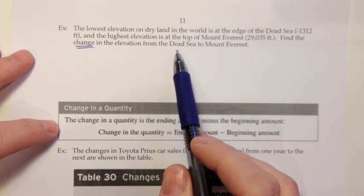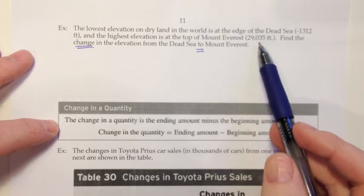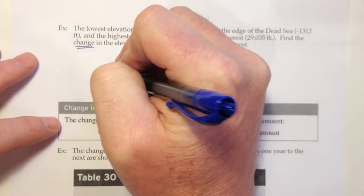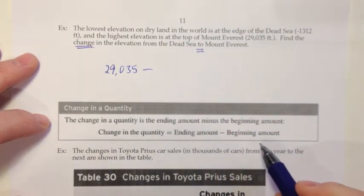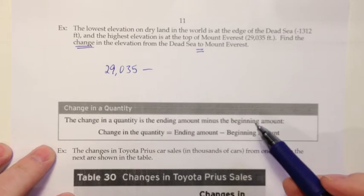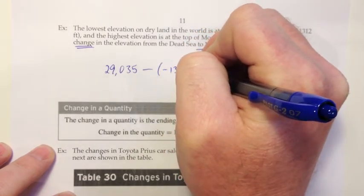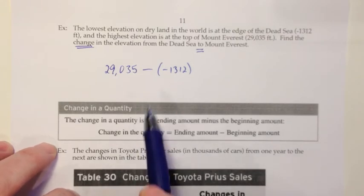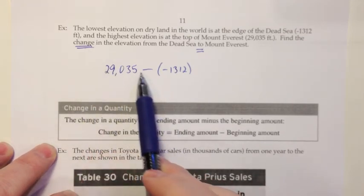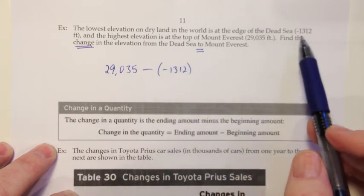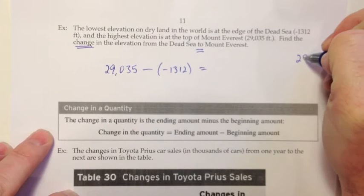So find the change in elevation if you go from the Dead Sea to Mount Everest. So our ending point is Mount Everest. And Mount Everest is 29,030 feet high. So I'm going to start out with the ending amount, 29,035. And then I'm going to subtract the beginning amount. And this is where people get into trouble. What's the beginning amount? It's not 1,312. The beginning amount is negative 1,312. So a lot of times people will do this as just 29,000 minus the 1,300 and not get the two negatives. But you have this negative and that negative for different reasons. This negative is because they want you to do change. So you have to subtract. And then this negative is because you're coming from an elevation that's below sea level. And if you have those two negatives, they're going to make a positive.